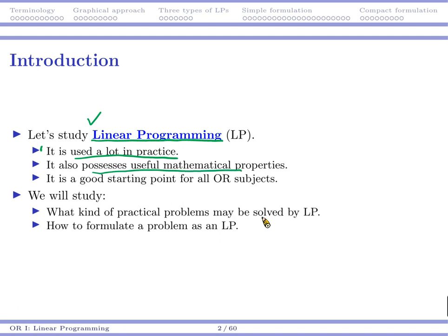It also has very nice, very beautiful mathematical properties. We don't have time to talk about all of them, but we will talk about them a little bit. Basically, for most textbooks, most online courses, most physical courses, if the course talks about OR, it pretty much always starts from Linear Programming. Because it's useful, because it's the first thing that was invented in the field of operations research, because it has nice mathematical properties.